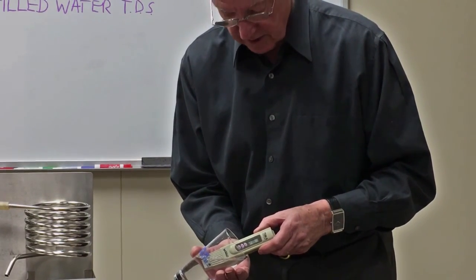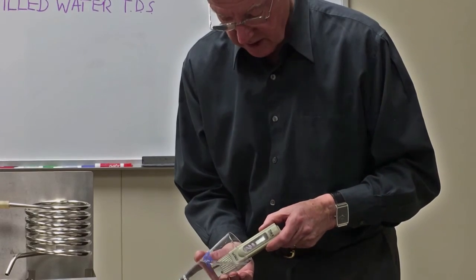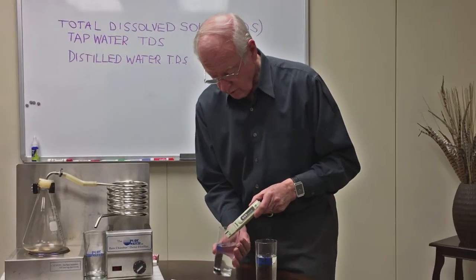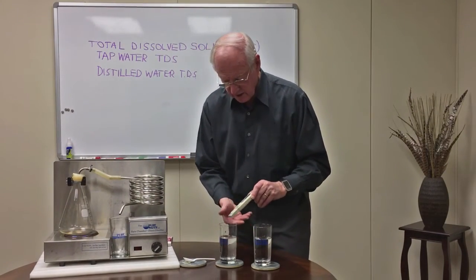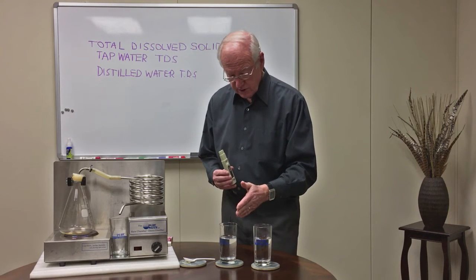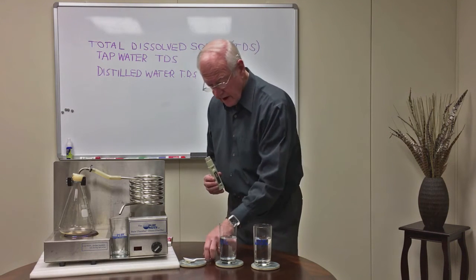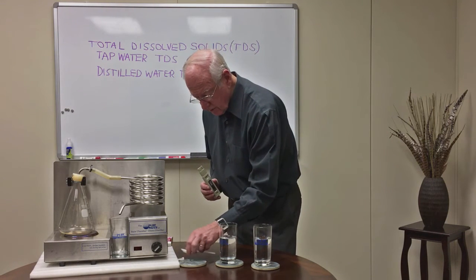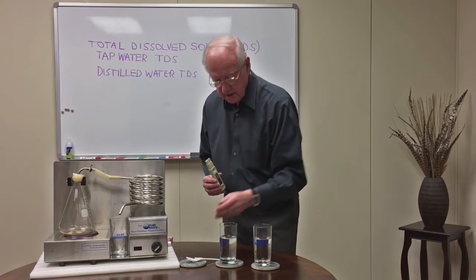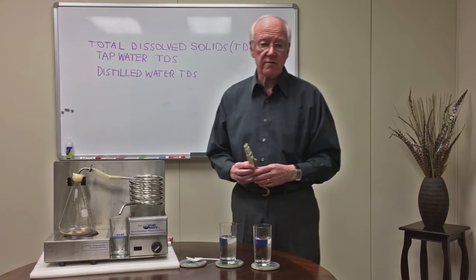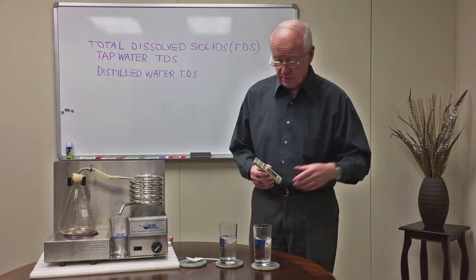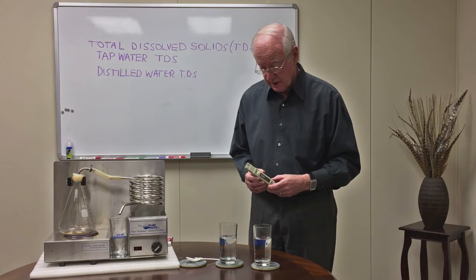And now it is 213 or something like that — I can't see it totally here, but you can see it on the camera. So what I've done is I have taken pure distilled water, added just a little bit of salt — I mean, it was in this packet — and I get a reading of just over 200 parts per million.